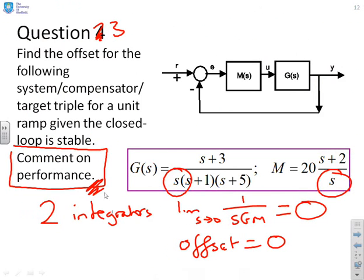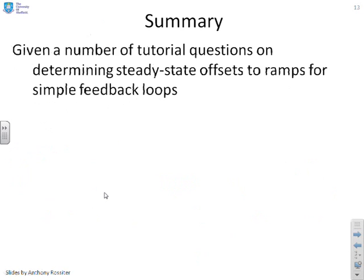So what's our conclusion? Comment on performance. Yes, I've eliminated the offset, but that doesn't mean performance is particularly good. And this is not surprising. If you have got two integrators, you're setting yourself quite a challenge to get good behaviour. So a summary, we've given some tutorial questions determining the steady state offset at ramps for simple feedback loops.